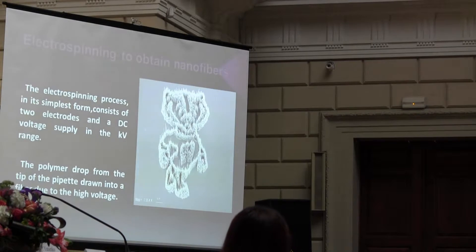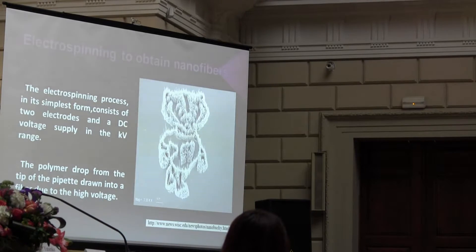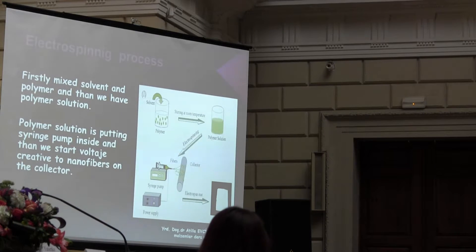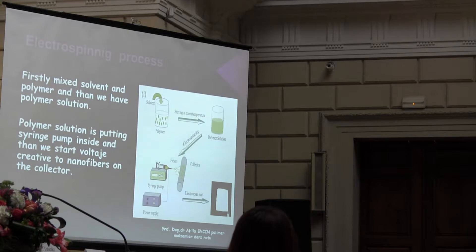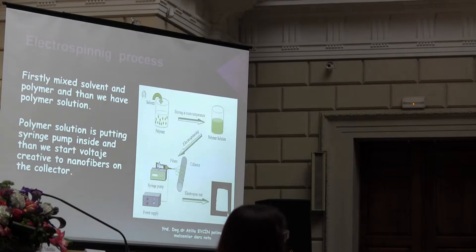The electrospinning process works at low range where the polymer from the tip of the pipette is drawn into fiber using high voltage. First, I will show how the polymer solution can be used. First, dissolve the polymer to make a polymer solution. After cleaning, the polymer solution is placed inside, and then a voltage gradient draws the nanofibers onto the collector. We are using a flat collector and an aluminum core.